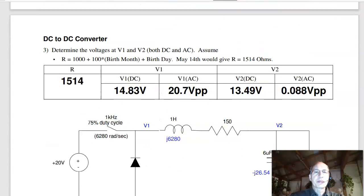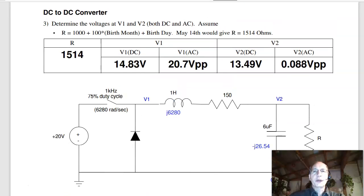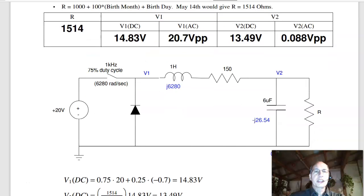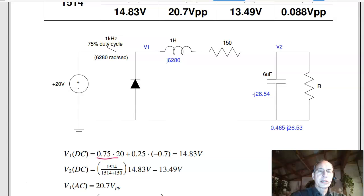Problem number three. This is a DC to DC converter analysis. Find the voltage at V1 and V2, both DC and AC. Now for the DC voltage at V1, I've got 75% of the time, it's at 20 volts, 25% of the time it's at minus 0.7. When the diode turns on right here, I get 0.7 volt drop, making V1 minus 0.7, making the average 14.83 volts. So this is the DC voltage, 14.83.